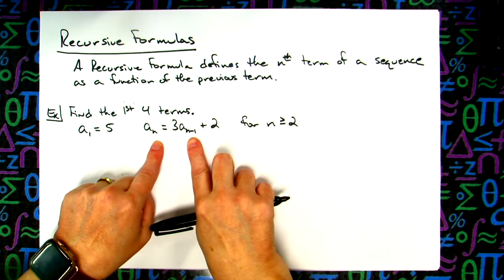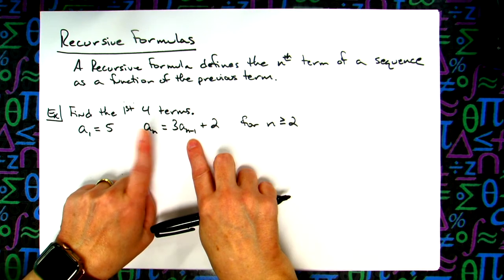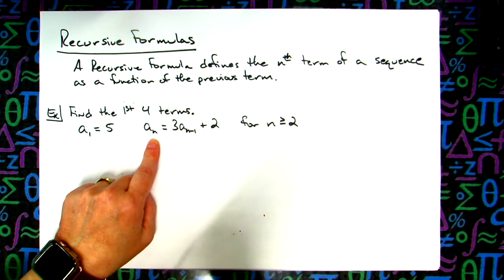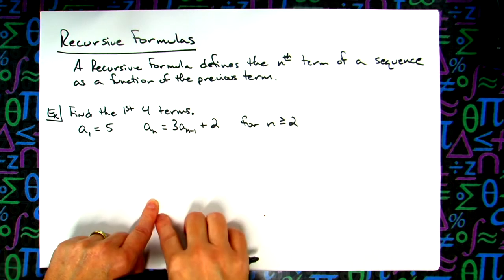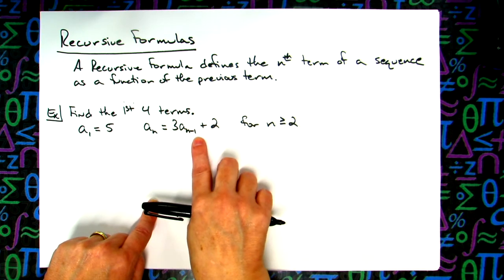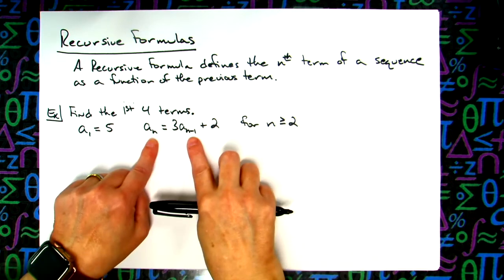And then we're going to say for n is greater than or equal to 2. Now this right here is how you can tell it's a recursive formula: if n is this term, then whatever term I'm at minus 1 would be the previous term. So if I was down here somewhere and it was a sub 4, then for here it would be a sub 4 minus 1. Well, 4 minus 1 is 3—that would be the previous term.